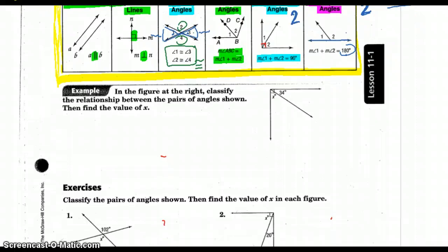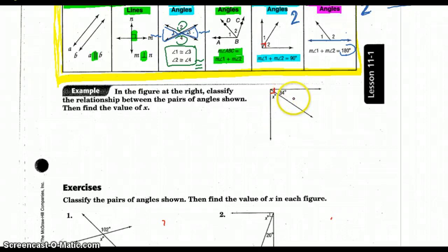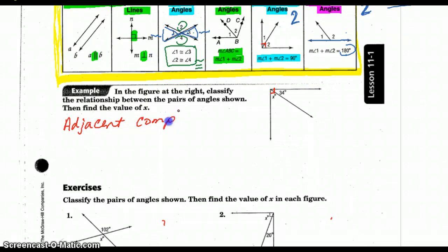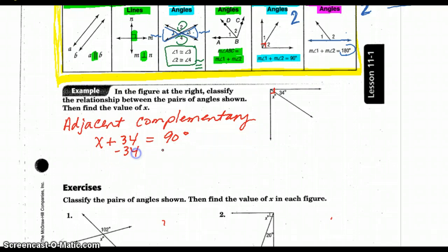In the figure at the right, classify the relationship between the pairs of angles and find the value of x. I notice these two angles are adjacent — they're sitting beside each other. There's a very important little box right there, meaning they add up to equal 90 degrees. So these are adjacent complementary angles. Since x plus 34 equals 90, we subtract 34 from both sides, and x equals 56 degrees.